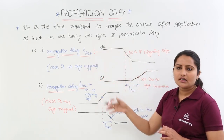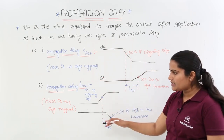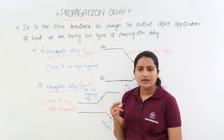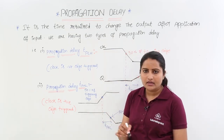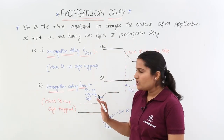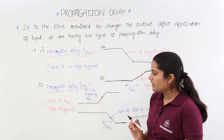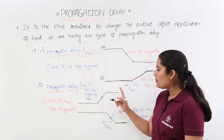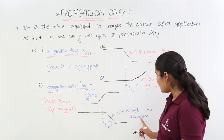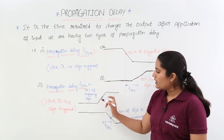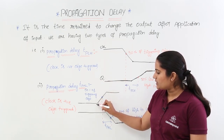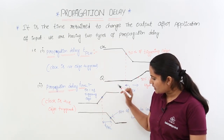You may use negative edge triggered or positive edge triggered. In the next example, I am considering a positive edge triggered clock. When the positive edge of the clock occurs, then only the response is going to change. Here, propagation delay high to low is calculated from the positive edge of the clock. This is a high to low transmission, and practically we consider 50% of the positive triggered edge.